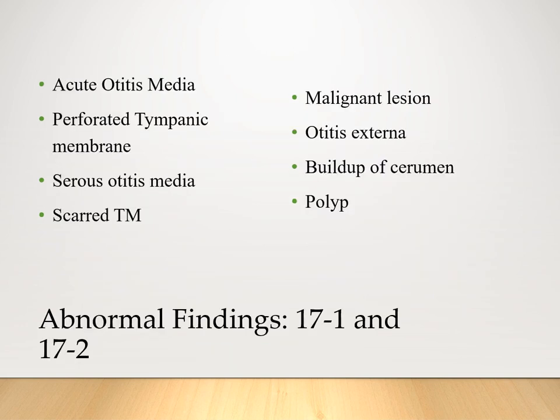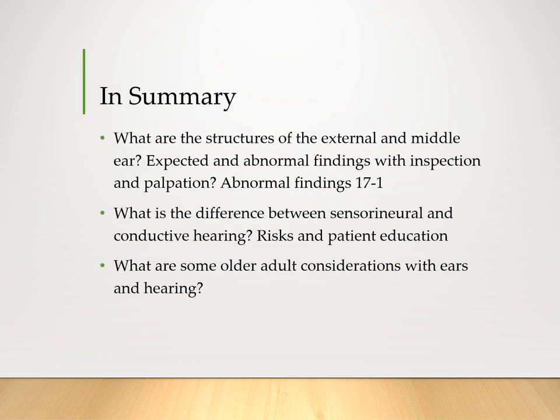To finish, the final abnormal findings we want to look at are otitis media, perforation of the tympanic membrane, and any malignant lesions found on the external ear. We discussed skin cancers, what those look like, and concerns regarding cerumen and how to address that with patients and provide education. This concludes Chapter 17. In summary, consider the structures of the external and middle ear, expected and abnormal findings seen with inspection and palpation, the difference between sensorineural and conductive hearing, and the older adult considerations with ears and hearing.